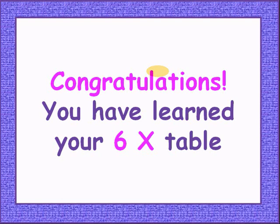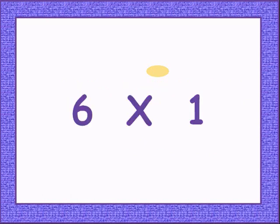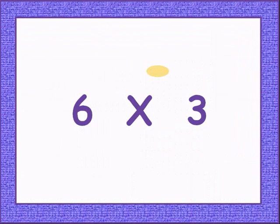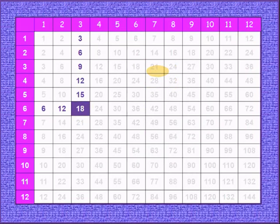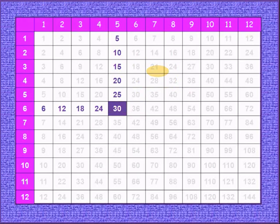Congratulations! Let's do it one more time, a little faster. 6 times 1 is 6. 6 times 2 is 12. 6 times 3 is 18. 6 times 4 is 24. 6 times 5 is 30. 6 times 6 is 36.